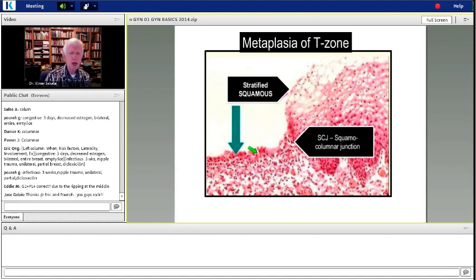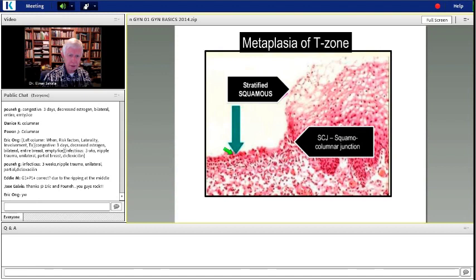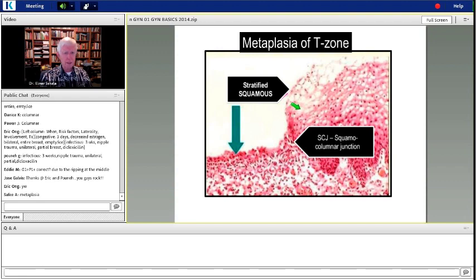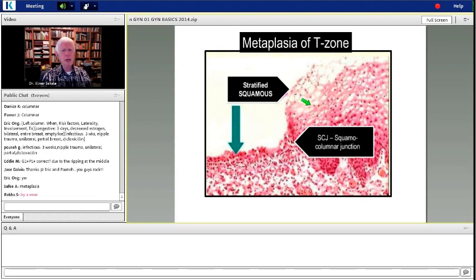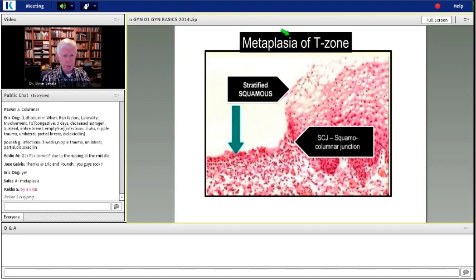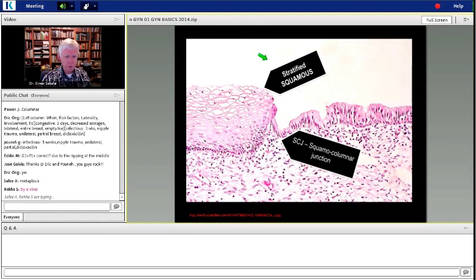What happens in the transformation zone is that columnar epithelium, which looks like this, can get changed or transformed. Columnar becomes squamous through a process which is known as metaplasia. Metaplasia. We'll come back to that.